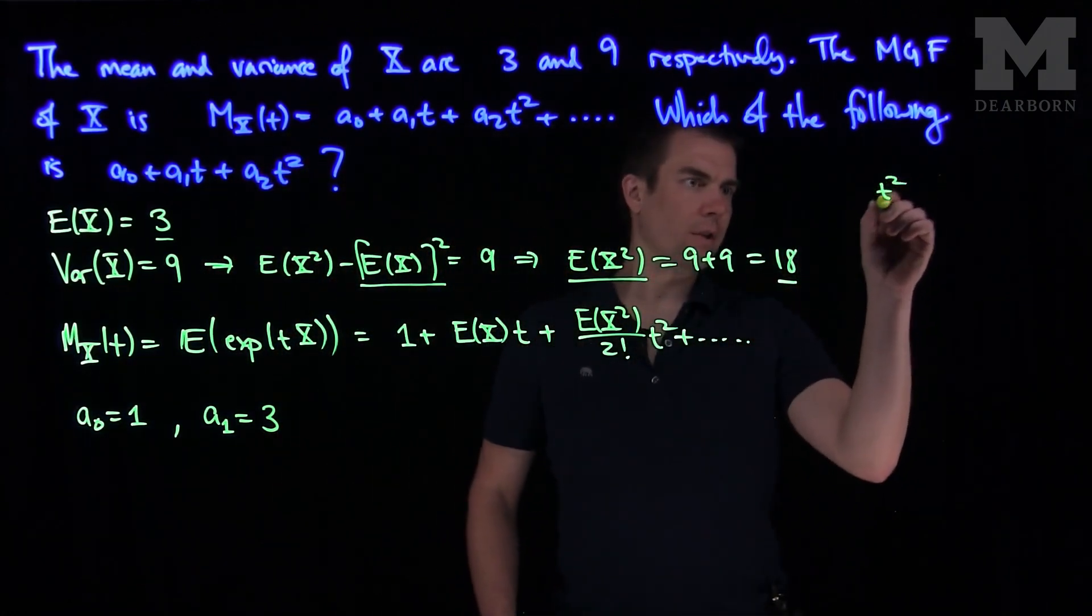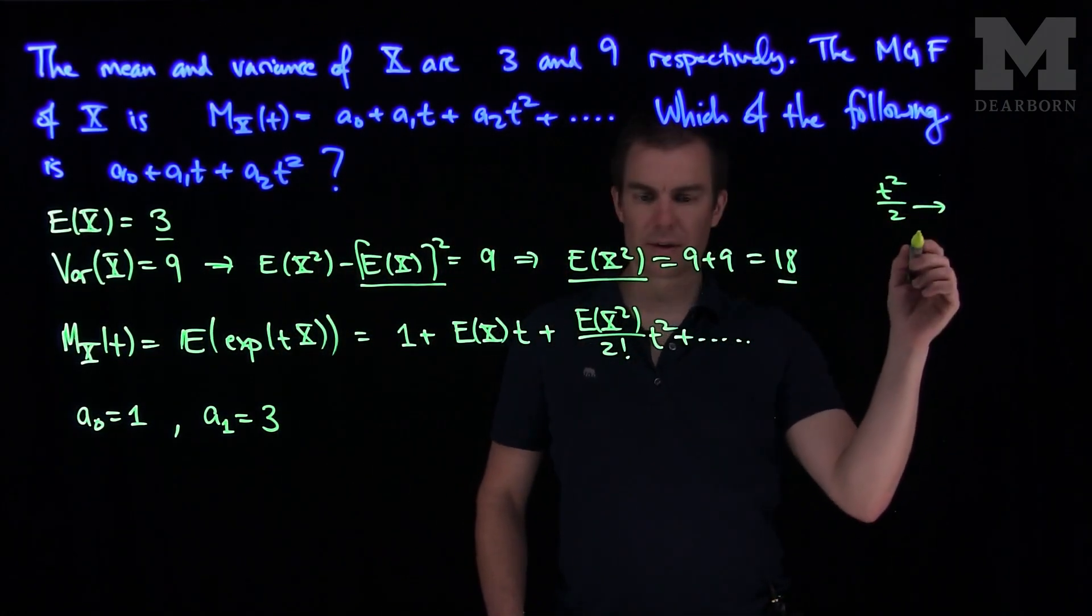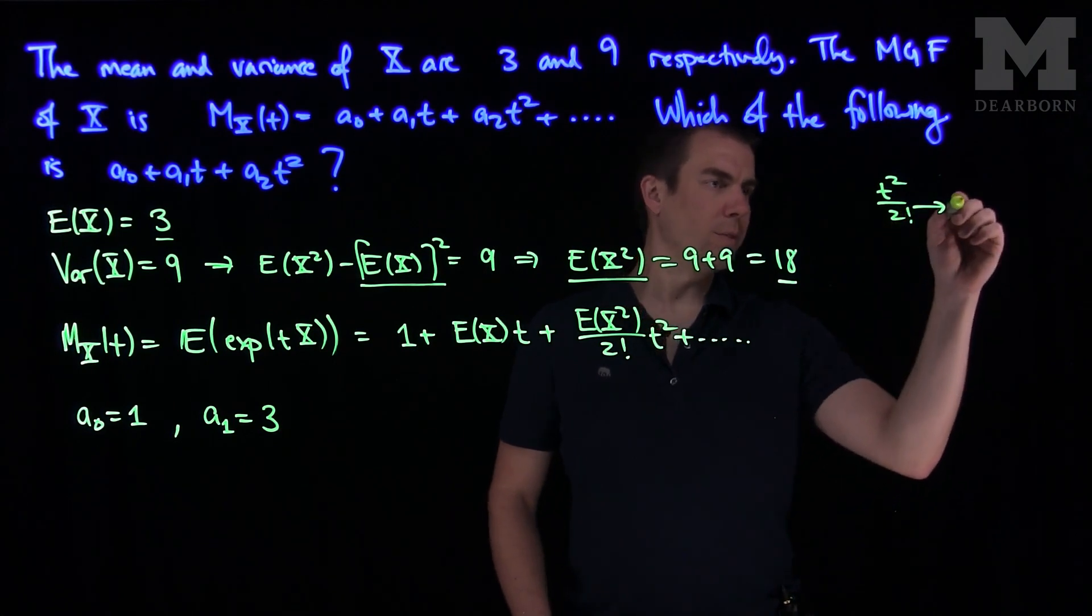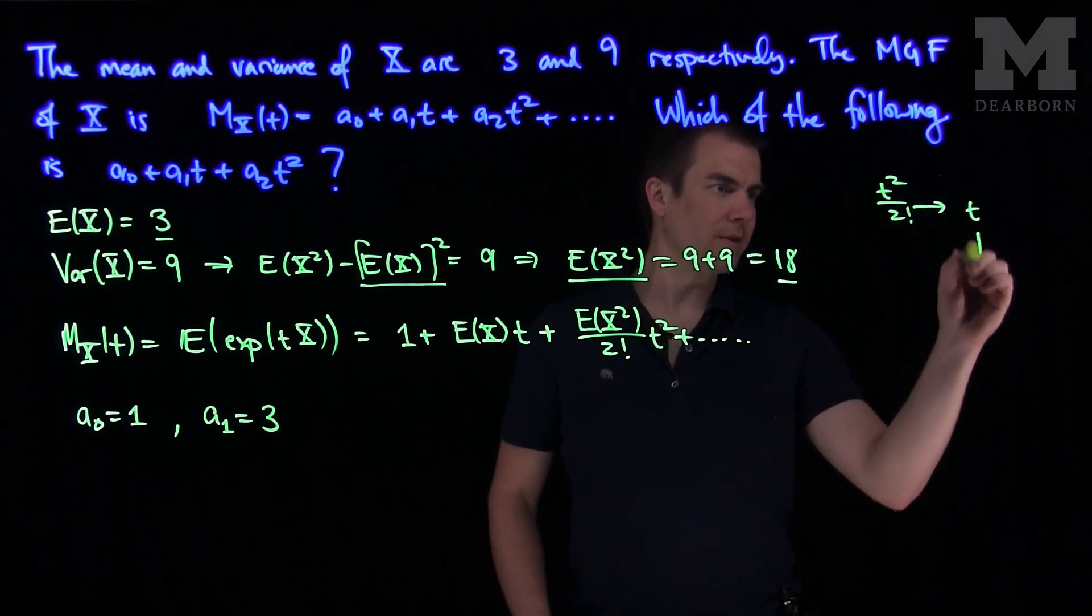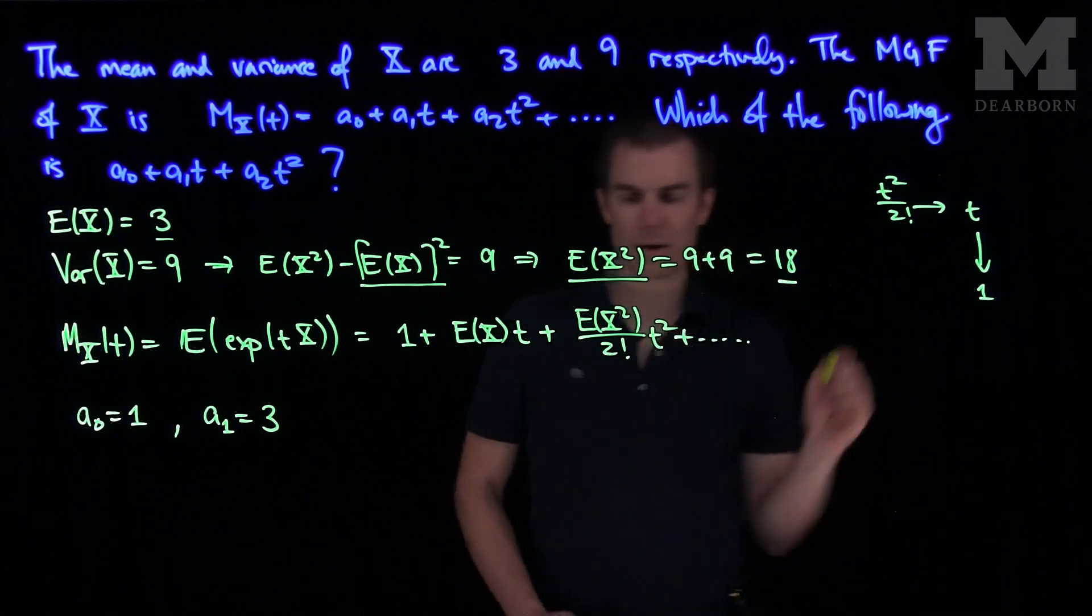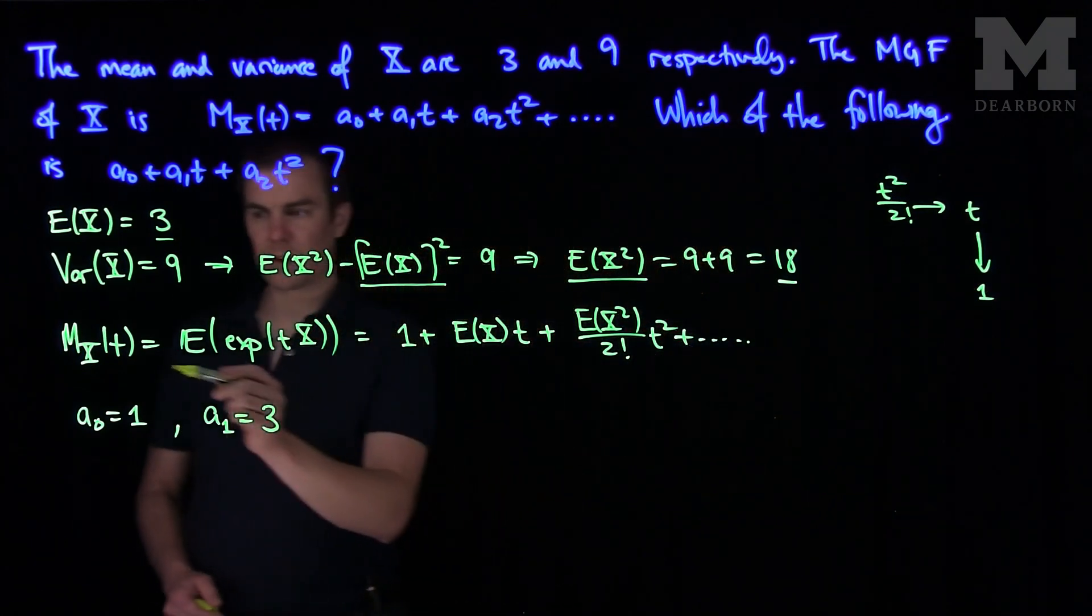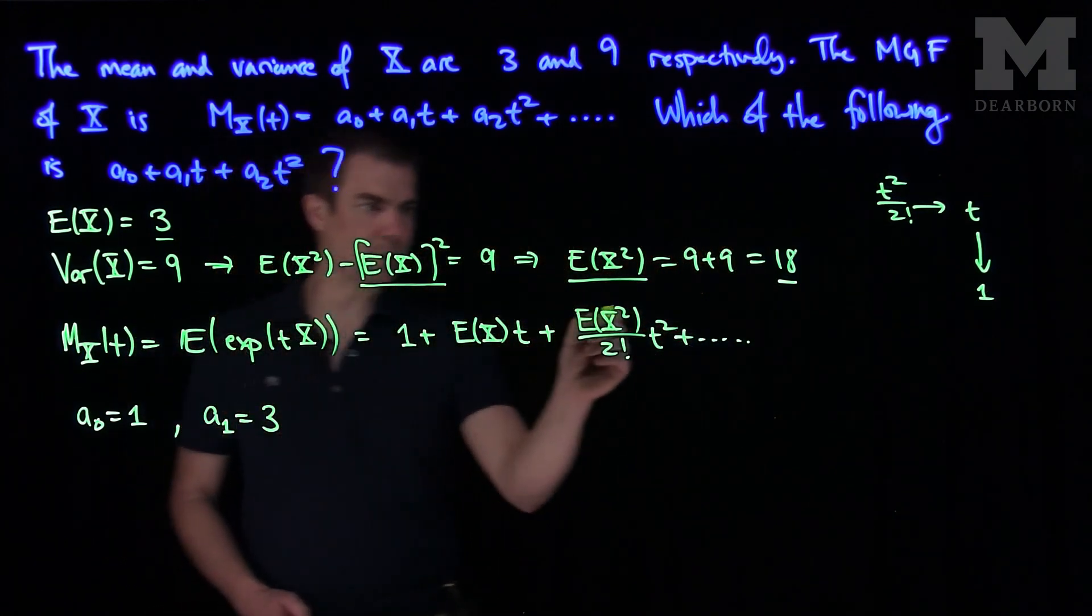And recall, of course, that if I look at t squared over 2, the first derivative of this, 2 factorial, will just be t. And then the second derivative of this will be 1. So the second derivative of M at 0 is going to be the expected value of X squared.